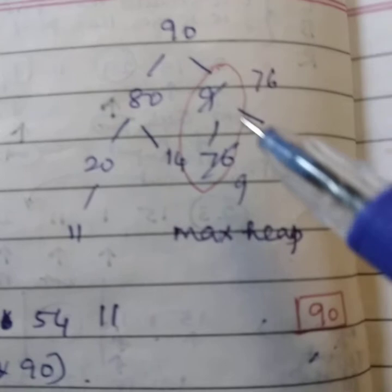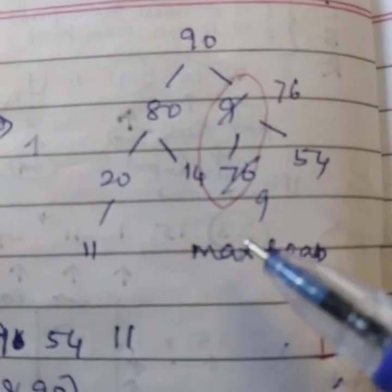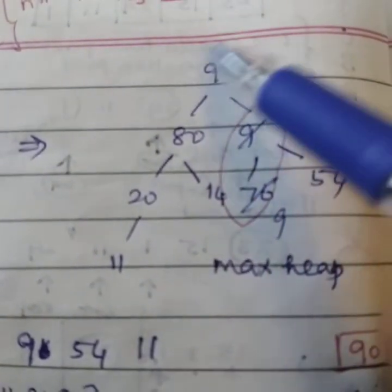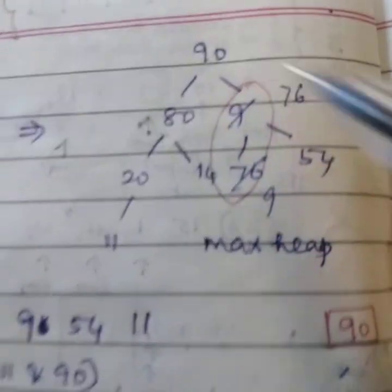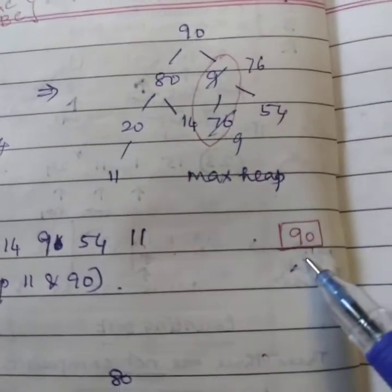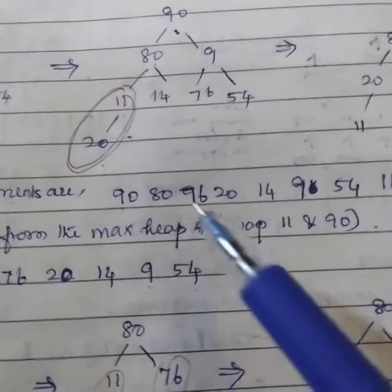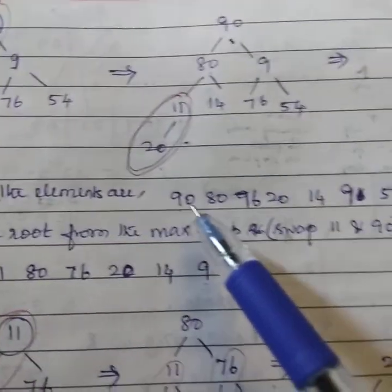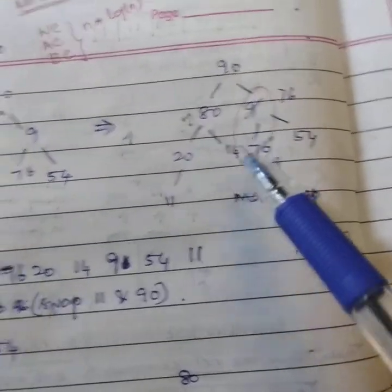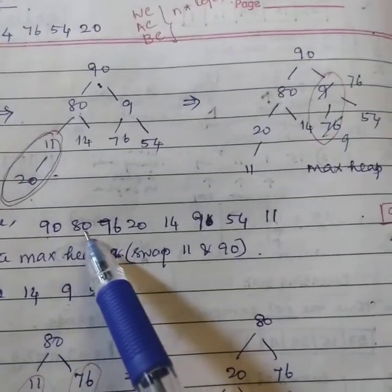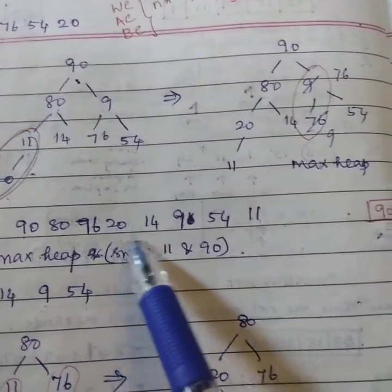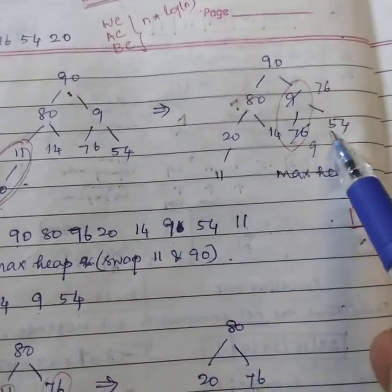So finally, after exchanging of values, the root node has to be replaced. So you have to delete the root node and keep it apart. How we can delete? Write down all the elements from here. So 90, 80, 76, 20, 14, 9, 54 and 11.